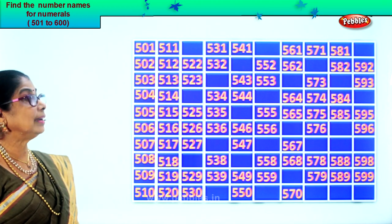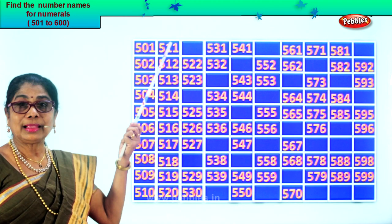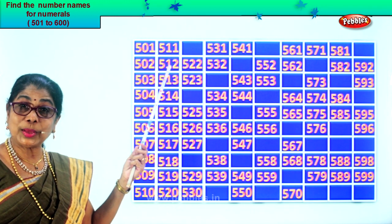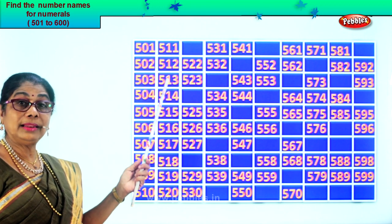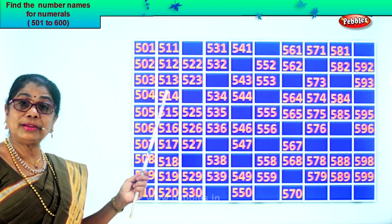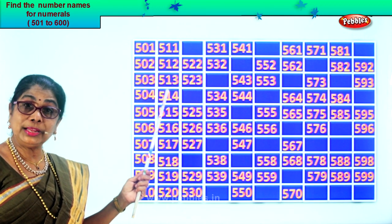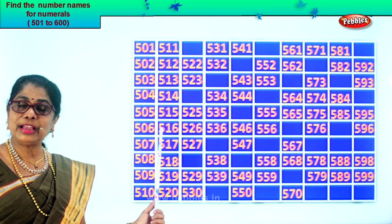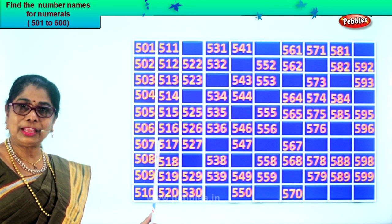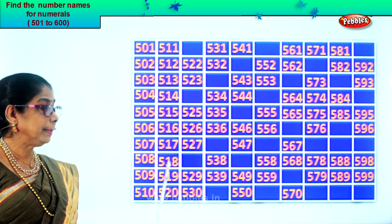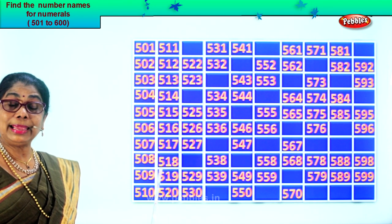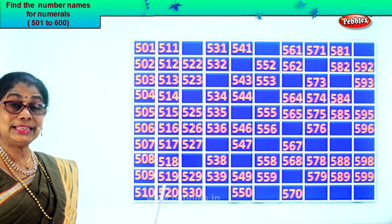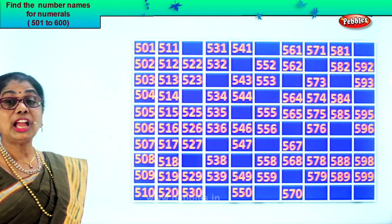Five hundred and twenty. Repeat after me: five hundred and eleven, five hundred and twelve, five hundred and thirteen, five hundred and fourteen, five hundred and fifteen, five hundred and sixteen, five hundred and seventeen, five hundred and eighteen, five hundred and nineteen, five hundred and twenty.